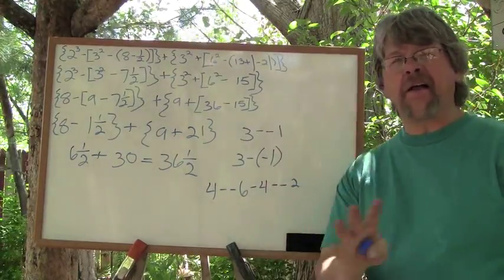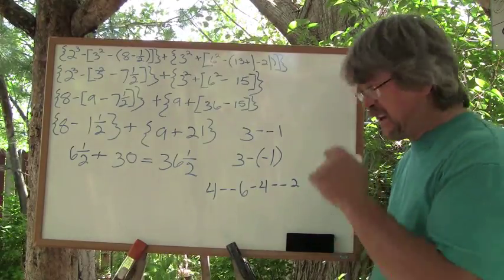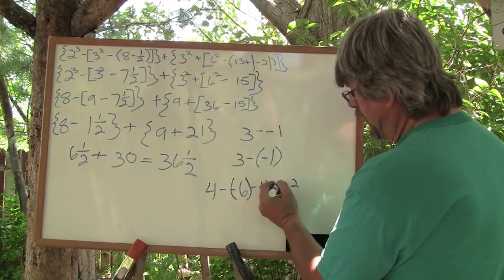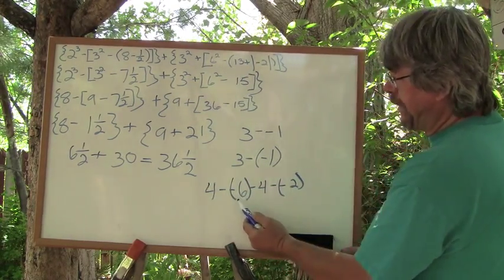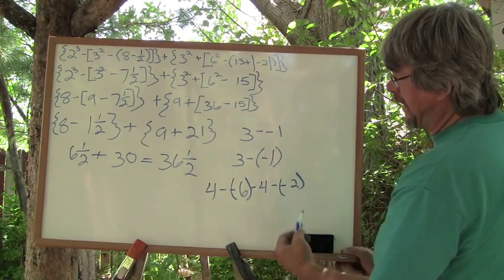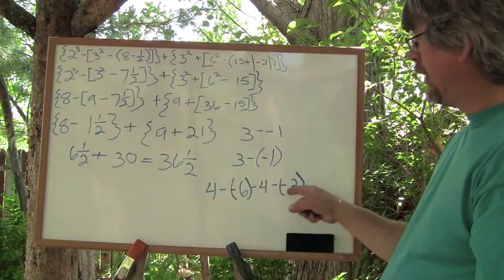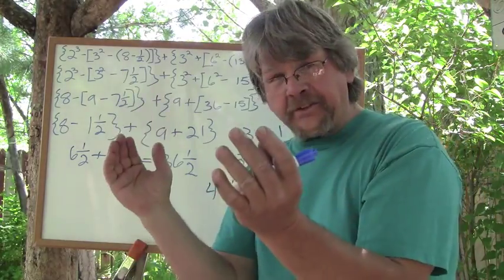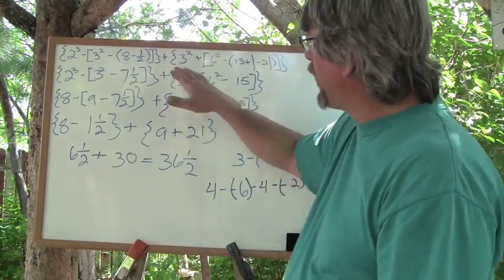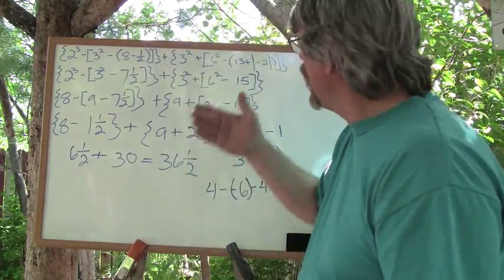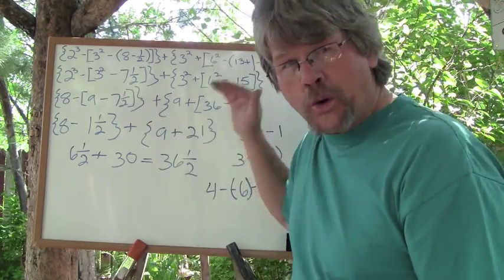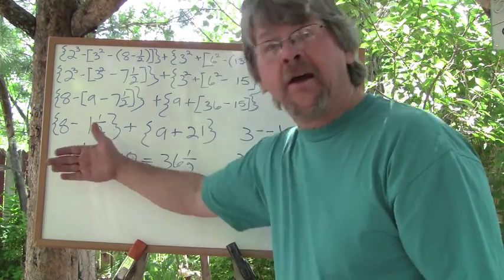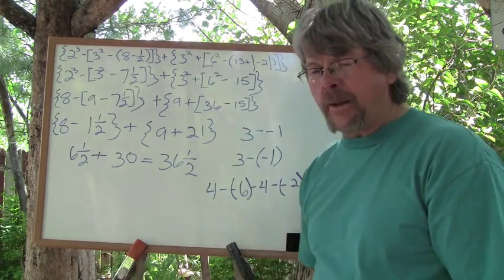If you have something like 4 minus negative 6 minus 4 minus negative 2 written without parenthesis, that's ugly and confusing. Watch what happens when you put parenthesis around the numbers — that's much easier to do. Use your parenthesis. That's all the reason these big long equations have parenthesis and brackets and braces: they're trying to keep things clear. It shows you which groups of numbers belong together, which ones to solve first, second, and third.